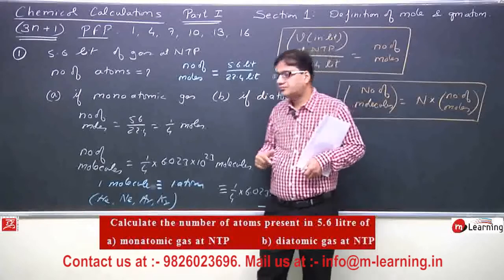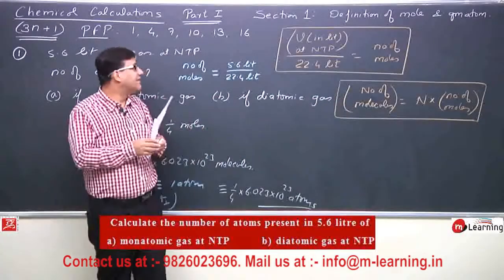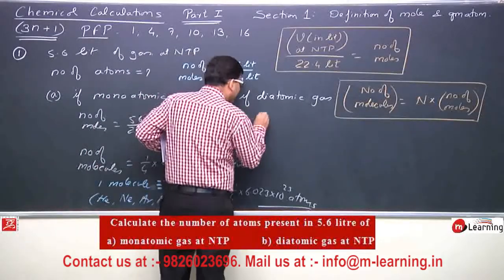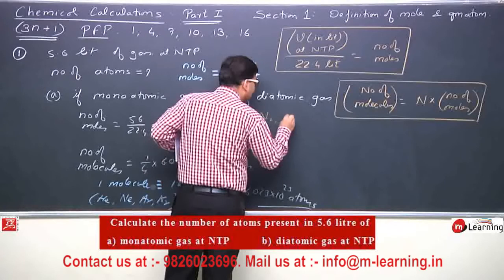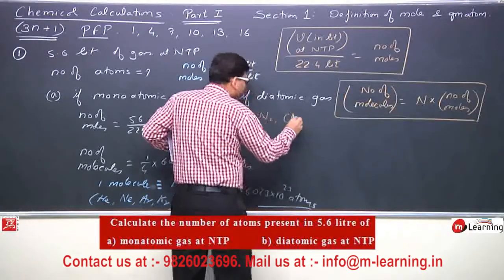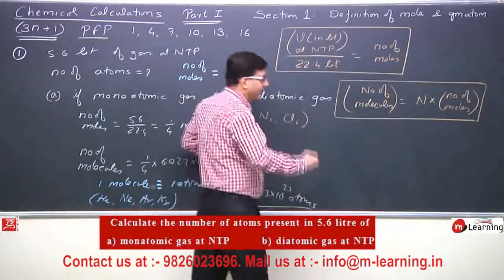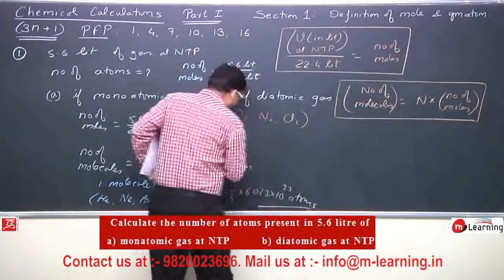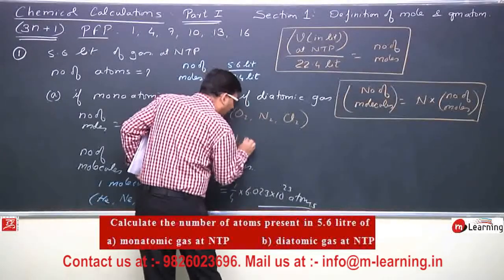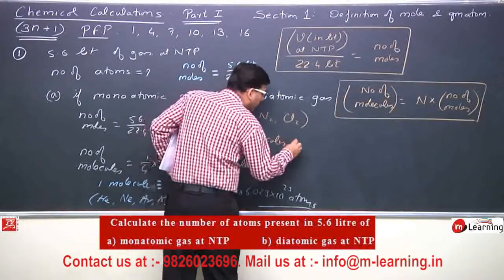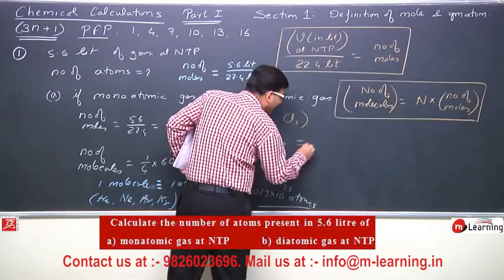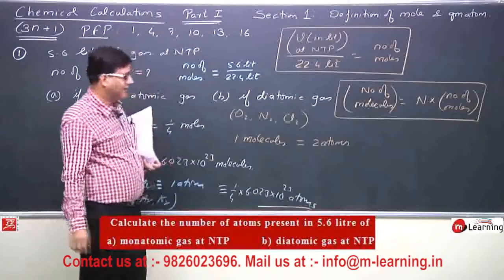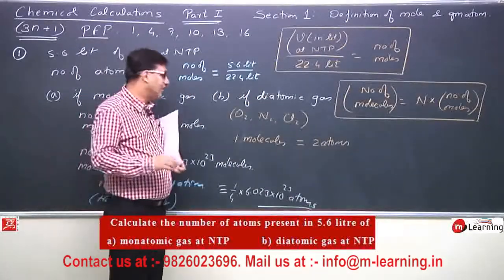If we have a diatomic gas — such as oxygen, nitrogen, chlorine — these are diatomic gases. The special property of diatomic gas is that one molecule contains two atoms.